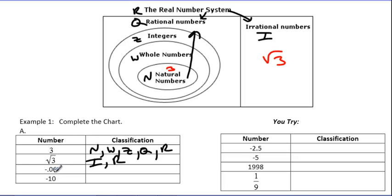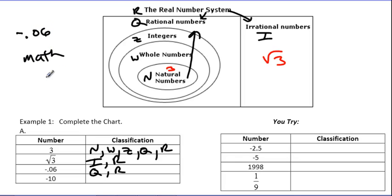Next, we have negative 0.06. A lot of times people see the negative and go right to the integers. But keep in mind, integers are still whole numbers. While it's negative, it's not an integer — it's just a rational number because I could write 0.06 as a fraction. If you don't believe me, take your graphing calculator, type in negative 0.06, hit the math button, then enter twice, and that will convert it to a fraction for you to prove it.